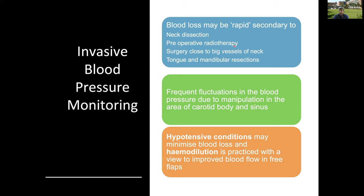Whether invasive blood pressure monitoring is needed is always a consideration. Though major blood loss is not common, when it occurs it is rapid — due to neck dissection, pre-operative radiotherapy making dissection difficult, or surgery near large vessels. Dissection of vascular structures like the tongue and mandible is another cause of blood loss. Frequent hemodynamic fluctuations may occur because surgery is very close to the carotid body and sinus.